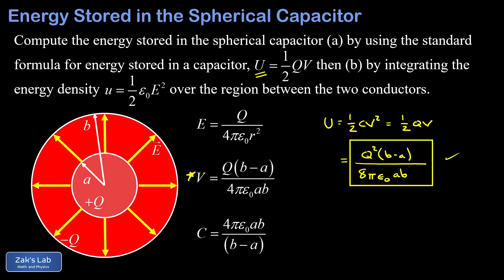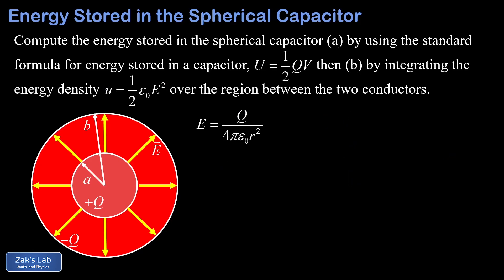We could just stop there, but the electric field energy density gives us an alternative approach to the problem and a wonderful opportunity to use physical integration to verify our result. For this approach we just need our electric field magnitude between the two conductors.